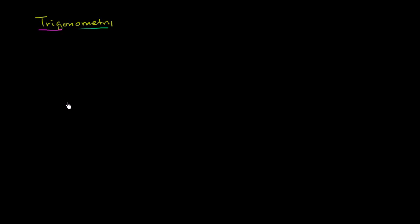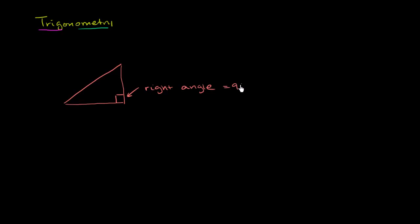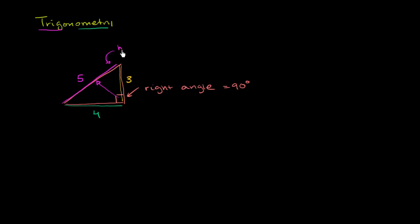So let me draw a right triangle. When I say it's a right triangle, it's because one of the angles here is 90 degrees — this right here is a right angle, equal to 90 degrees. This side over here is 3, the base of the triangle is 4, and the hypotenuse is 5. You only have a hypotenuse when you have a right triangle — it is the side opposite the right angle and the longest side.